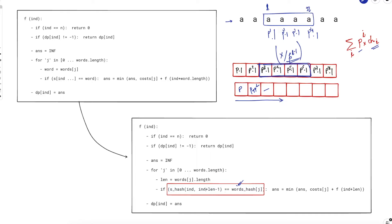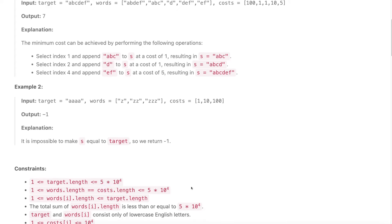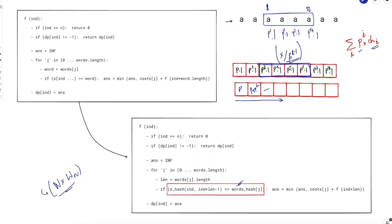After this optimization, complexity becomes O(n × W(n)) — we removed W(l). However, worst case W(n) (total words) can still be 5×10⁴, so the worst case is still 5×10⁴ × 5×10⁴ which is too slow. We need to reduce the W(n) loop further.